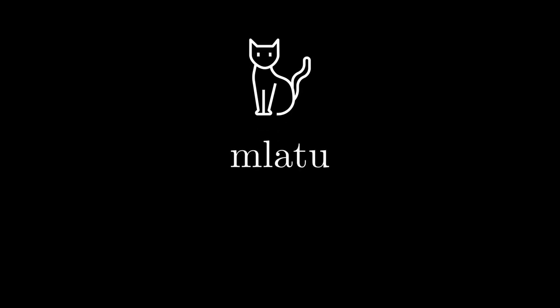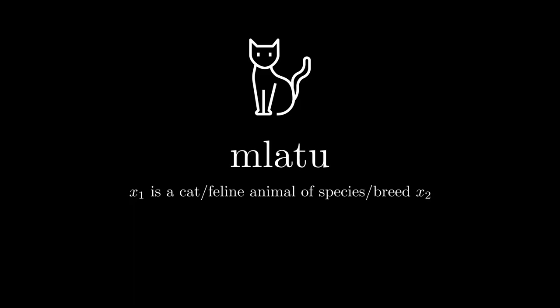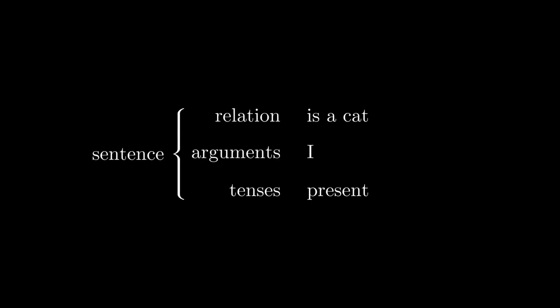Let's start with a cat. The word in Lojban for cat is mlatu. The word mlatu is, in the grammar, really a relation. The definition of mlatu is: x1 is a cat or feline animal of species or breed x2. The x1 and x2 are placeholders or arguments where you put the things that are in the relationship. A sentence or statement in Lojban is simply one relation, all the arguments that go with it, and any additional tenses that apply to the relation.